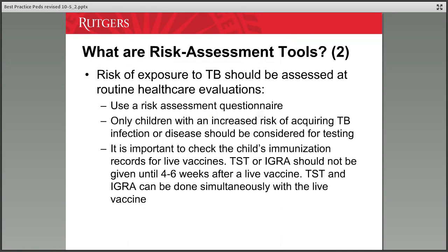Risk of exposure to TB should be assessed at routine healthcare evaluations using a risk assessment questionnaire. Only children with an increased risk should be considered for testing. It's important to check the child's immunization records for live vaccines such as MMR and varicella before doing a TST or IGRA. If the child received those vaccines within the last four weeks, wait at least four to six weeks before testing. You can do the test simultaneously with the vaccine, but not one to two weeks after, as it may produce false negatives.